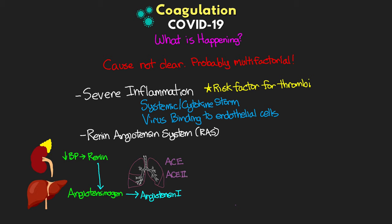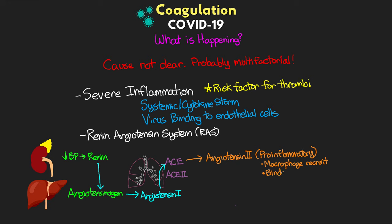Normally, angiotensin 1 interacts with the ACE enzyme and is converted to angiotensin 2. Angiotensin 2 is pro-inflammatory — it causes macrophage recruitment leading to tissue injury and clotting, and it binds to AT1 receptors on cells, leading to immune cell activation and coagulation. When we have too much angiotensin 2, our ACE2 receptor converts it into angiotensin 1-7, which is anti-inflammatory and counteracts angiotensin 2 — this is how the system maintains its checks and balances.